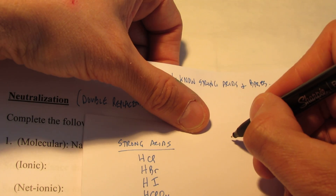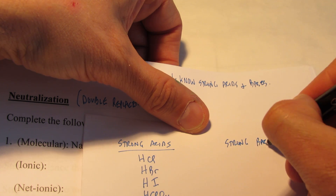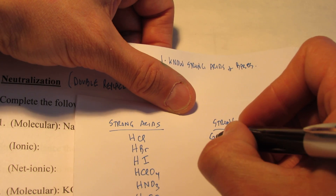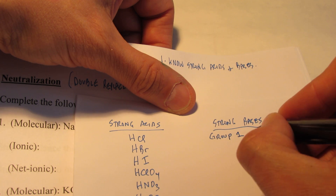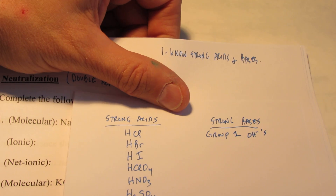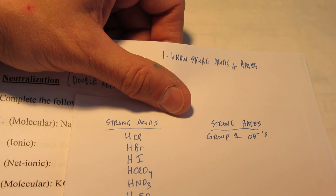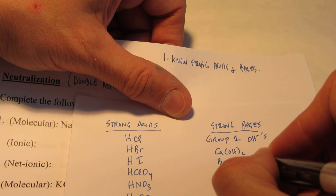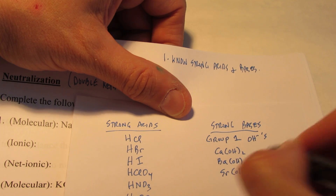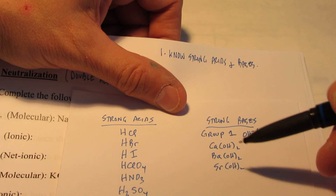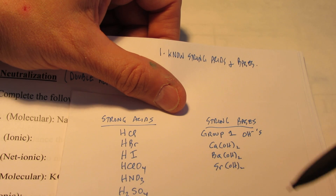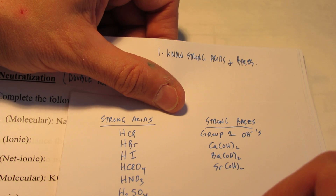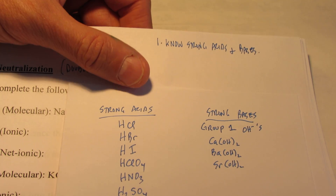I'm also going to list our strong bases. These are very similar to strong acids in that they dissociate 100% of the time. They are the group 1 metal hydroxides: lithium, sodium, potassium, rubidium, and cesium hydroxide — along with calcium hydroxide, barium hydroxide, and strontium hydroxide. When placed in water, these bases dissociate into metal ions and hydroxide ions 100% of the time. Weak bases stick together and don't dissociate very much. We're going to use this list as we write neutralization reactions.